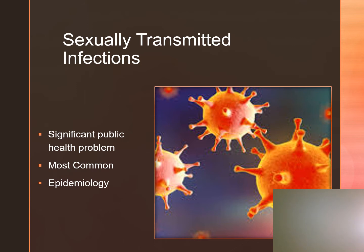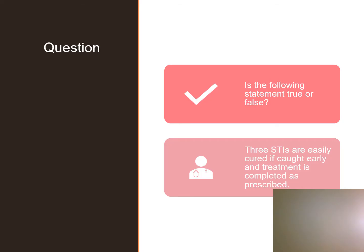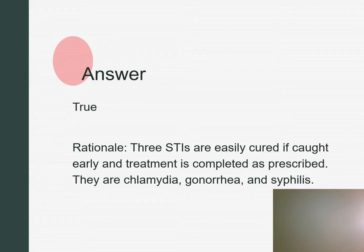Client teaching for those being treated for STIs should include, and this also helps with prevention: abstinence during treatment, the use of male condoms with a spermicide, and the partner or partners of an infected person also have to be treated. Clients should be encouraged to urinate and wash genitals in the perineum following intercourse, and wash their hands and any areas in contact with semen or vaginal mucus. True or false: three STIs are easily cured if caught early and treatment is completed as prescribed. This is true.